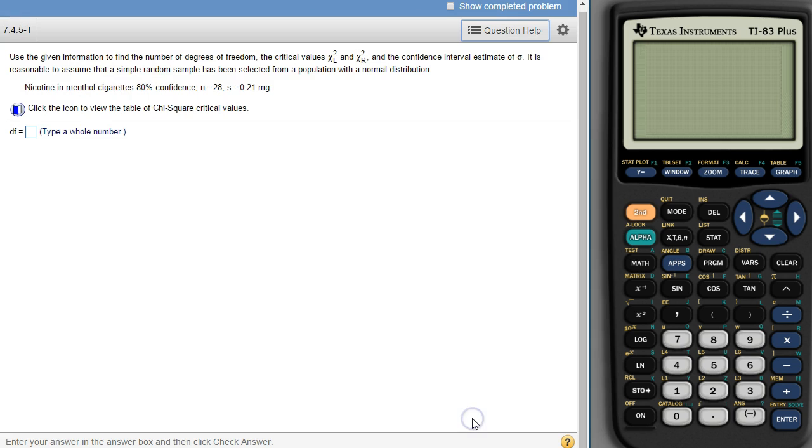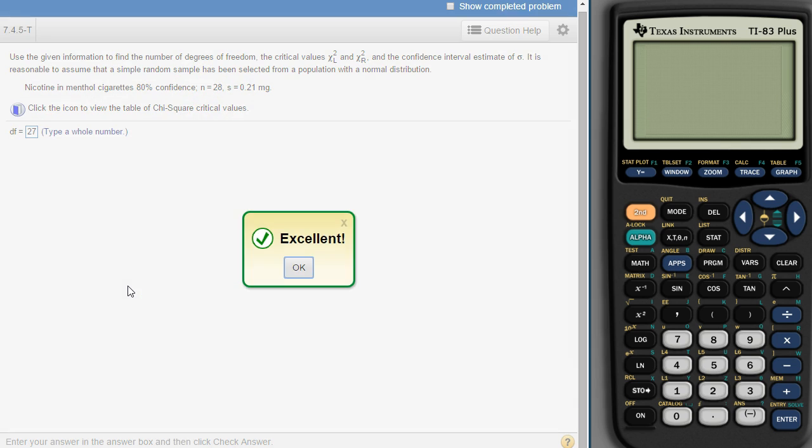If we are going to use the calculator, first of all degrees of freedom is just one less than the sample size, so we have 28 degrees of freedom. In this case it's 27.